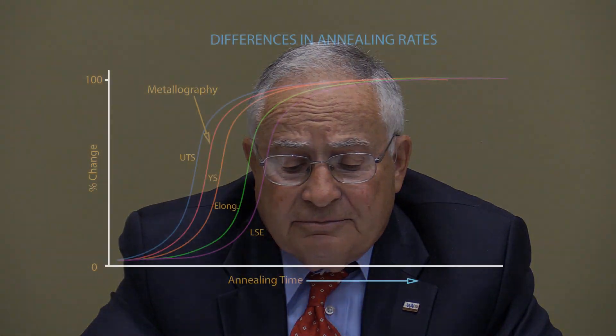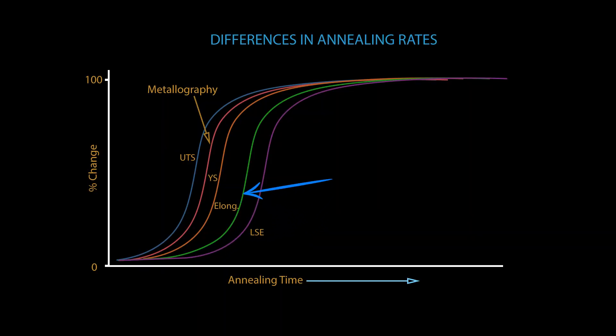Now, if you have some wire and you're going to measure the changes during annealing, there are a lot of different ways of measuring it. In most plants, people use tensile elongation. This curve over here — where it says elongation — is what you would get if you took wire that was annealed at a constant temperature for different periods of time, and as you see, you get a typical S-shaped curve. But notice there's a difference if you use different mechanical properties: ultimate tensile strength, yield strength measured metallographically, or LSC — low stress elongation — which is what magnet wire people use.